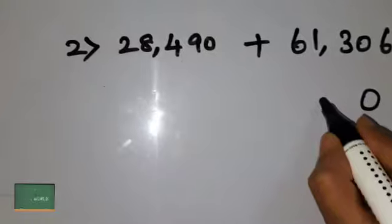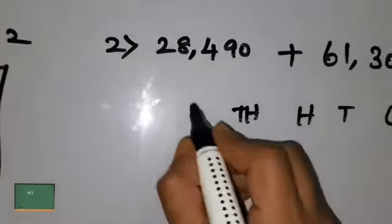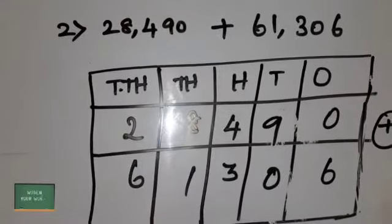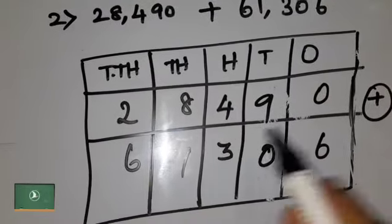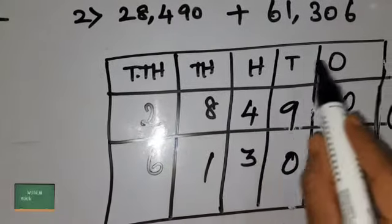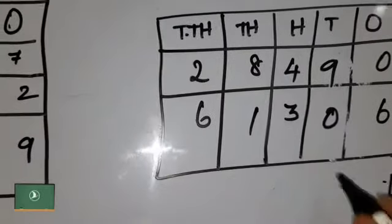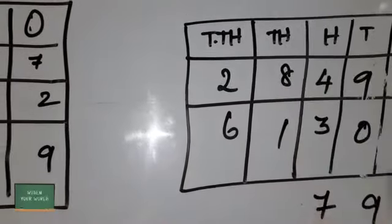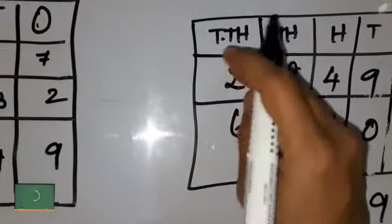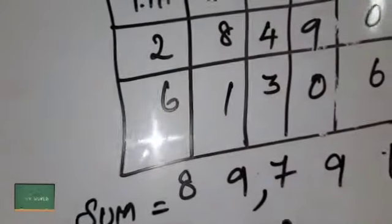The second problem is 28,490 plus 61,306. Before calculating, we enter the values into a place value chart. I have already written them according to their place values. Now let's calculate: 0 plus 6 is 6; 9 plus 0 is 9; 4 plus 3 is 7; 8 plus 1 is 9; 2 plus 6 is 8. So the total is 89,796.